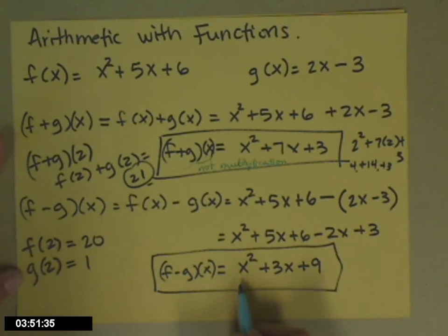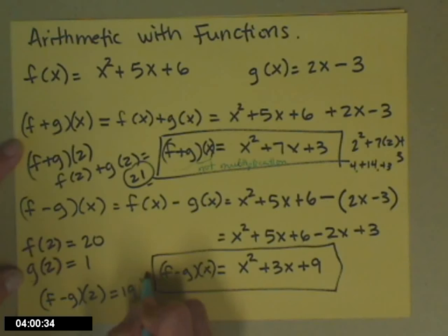Same thing, f minus g of 2 should be 19. Which we get if we plug a 2 in here.